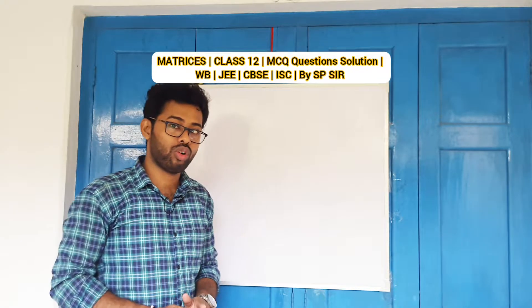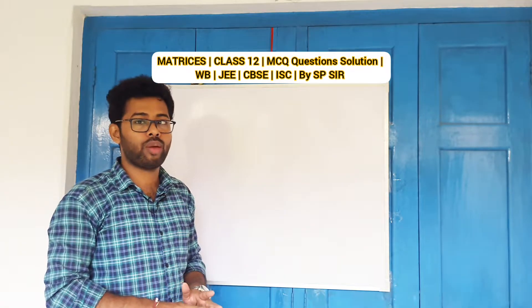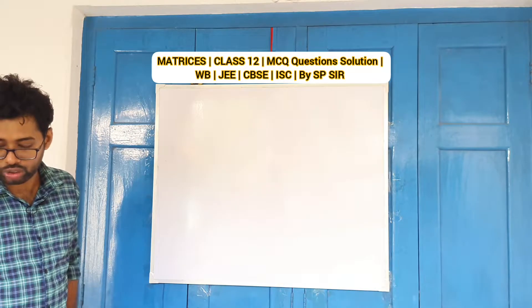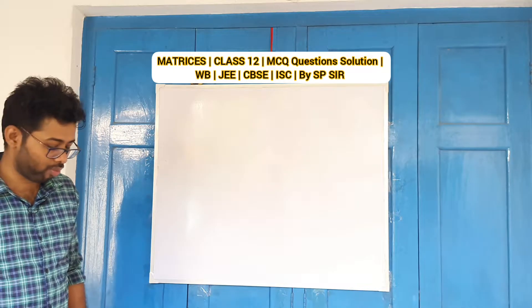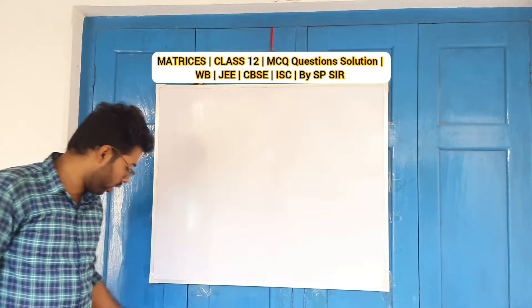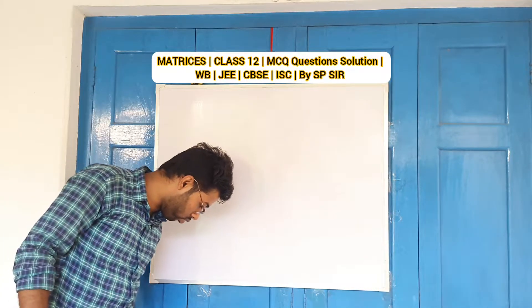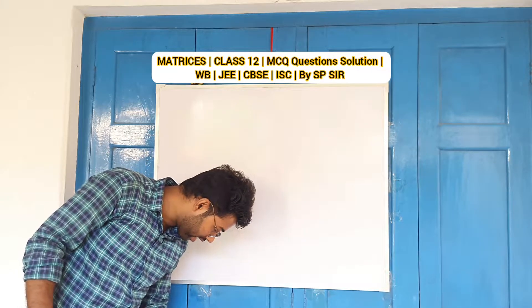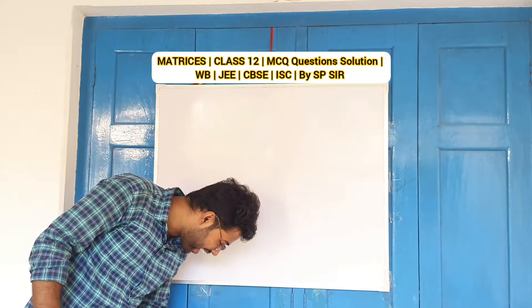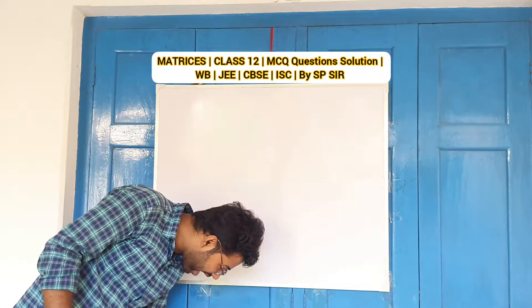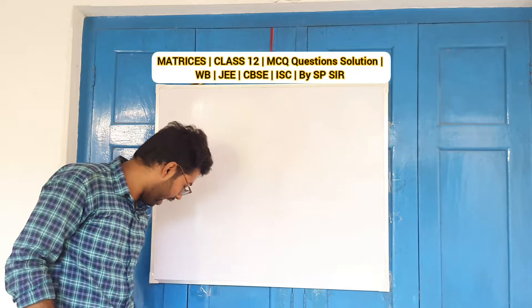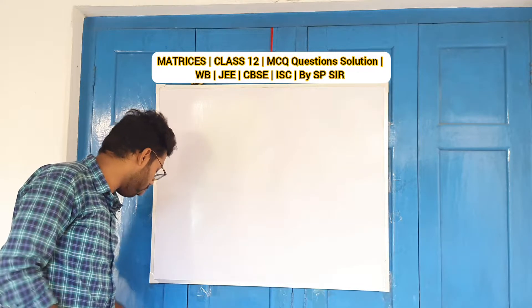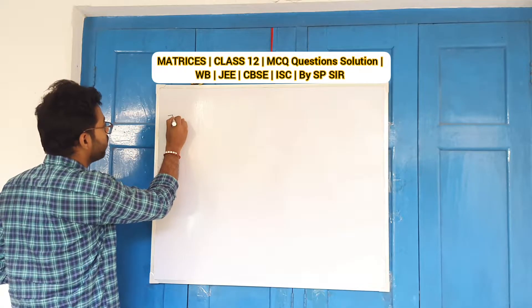Today we are doing MCQ type. It's question 9-8. B to the power T and A to the power T. It's a property.